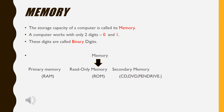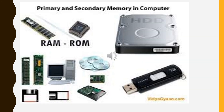Next is secondary memory. Secondary memory is nothing but the external memory of the computer — that includes CDs, DVDs, pen drives, floppy disk, etc. The given picture shows the primary and secondary memory of the computer, including RAM, ROM, floppy disk, hard disk, pen drives, CDs, etc.